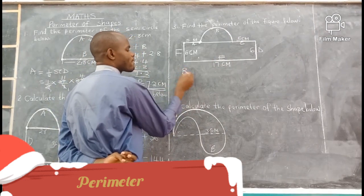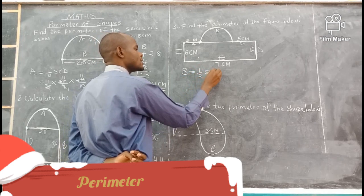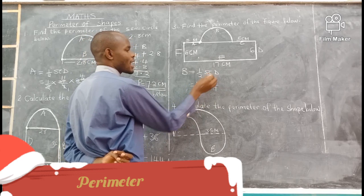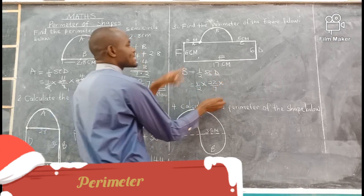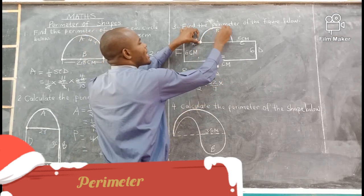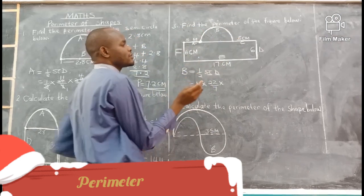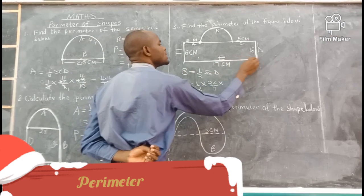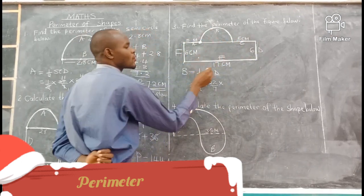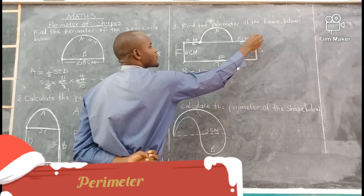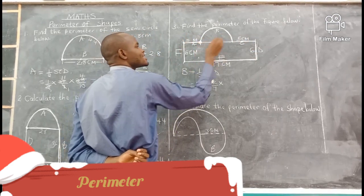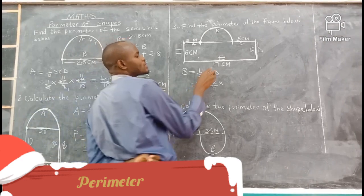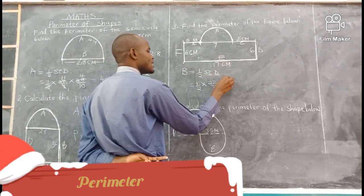How do we get B? Half pi times diameter: half times 22 over 7 times the diameter. The diameter is the distance between the two ends of the semicircle. You are not directly given it, but this figure is a rectangle, and opposite sides of a rectangle are equal. So the total width is 17. The two sides of 5 each give 5 plus 5 equals 10, so the diameter is 17 minus 10 equals 7.